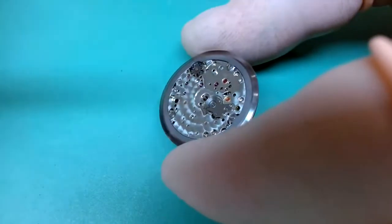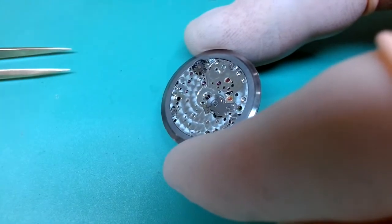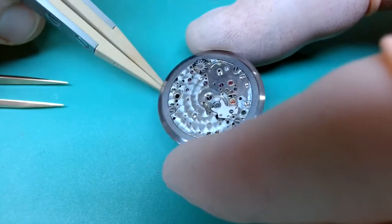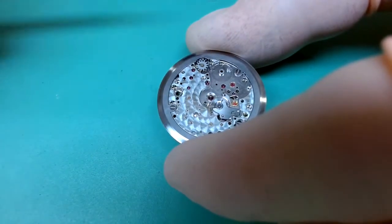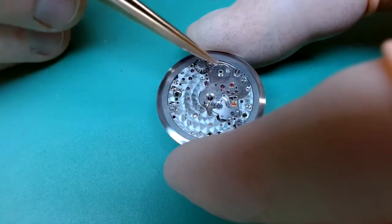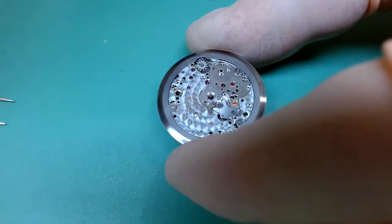So what I'm going to do is hold the movement between my fingers like this and then I'm going to unscrew the three screws that hold our peripheral winding weight on.